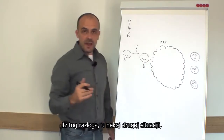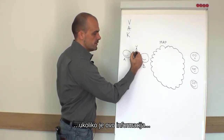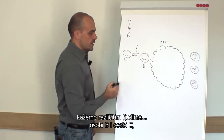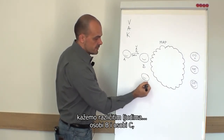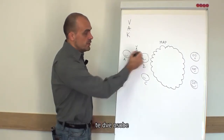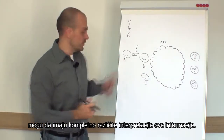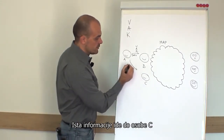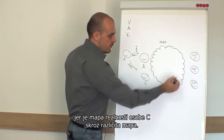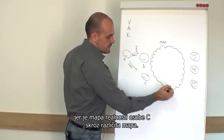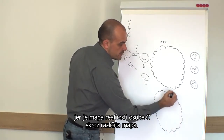That's why in different situations, if you say the same information to different people — person A and person C — those two people might have completely different interpretations of this info. The same info goes to person C, but the map of reality of person C is a completely different map.